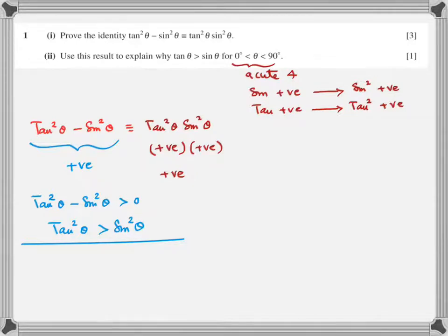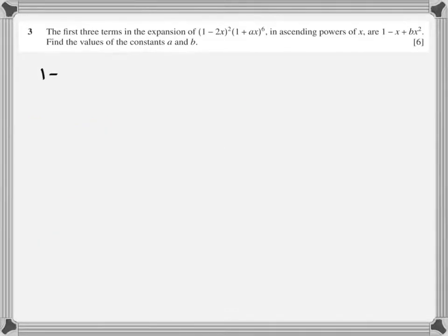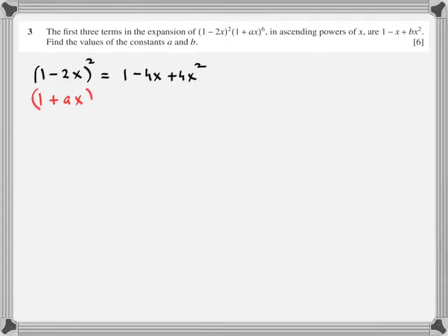Question 2 on binomial: find the first three terms in the expansion in ascending powers of x and find the values of constants a and b. 1 minus 2x whole squared is a minus b whole squared: a squared minus 2ab plus b squared. For 1 plus ax raised to the power 6, I need three terms — the constant, the x term, and the x squared term — using 6C1 and 6C2 on a calculator.